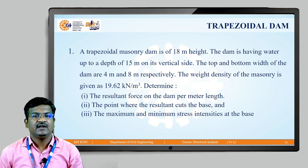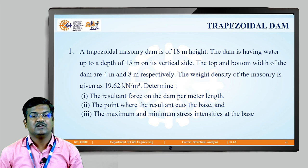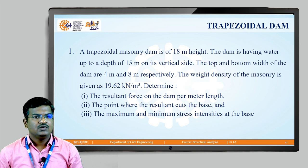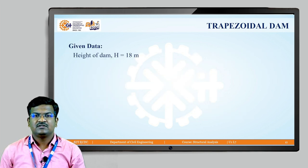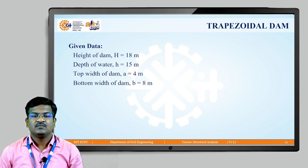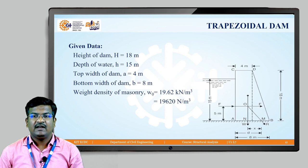Let us solve a numerical on a trapezoidal dam. A trapezoidal dam of height 18 m has water up to a depth of 15 m on the vertical side. The top width is 4 m and bottom width is 8 m. The weight density of masonry is 19.62 kN/m³. Find: (1) the resultant force per meter length, (2) the point where the resultant cuts the base, and (3) the maximum and minimum stress intensity at the base.